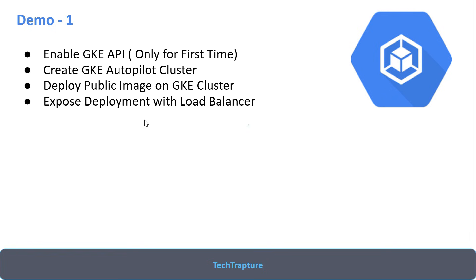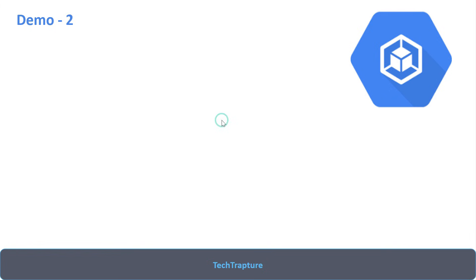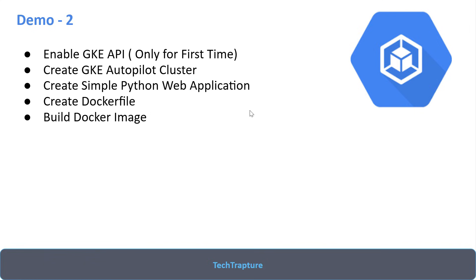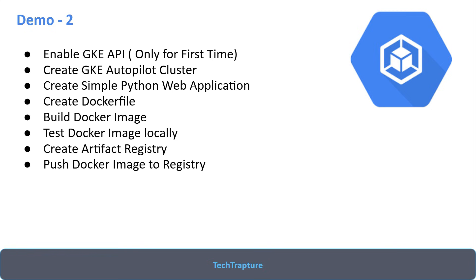We accessed our application on the external IP. Now in our second demo, we'll go to the created Autopilot cluster. We'll create a simple Python web application, create a Dockerfile, build our own Docker image, test that image locally, create an Artifact Registry, and push our Docker image to Artifact Registry, then deploy that image on the GKE cluster.